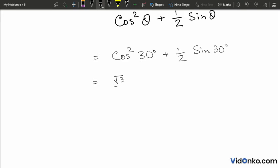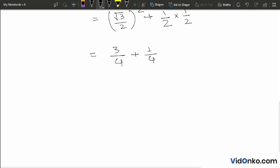Now root 3 by 2 squared is 3 by 4, plus half into sine 30 which is half, gives us 1 by 4. So we have 3 plus 1 over 4, which equals 4 by 4, which equals 1.